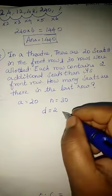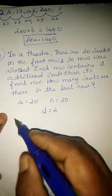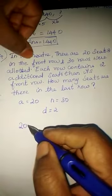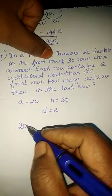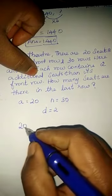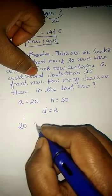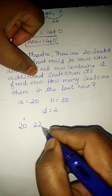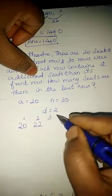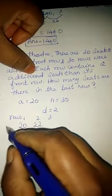So how I am saying this is the first row there are 20 seats, it means the front row. And each row contains two additional seats, this is the first row and the next row contains two additional seats means it's 22. Then this is the second row, then third row, this is the number of rows and this is the seats.